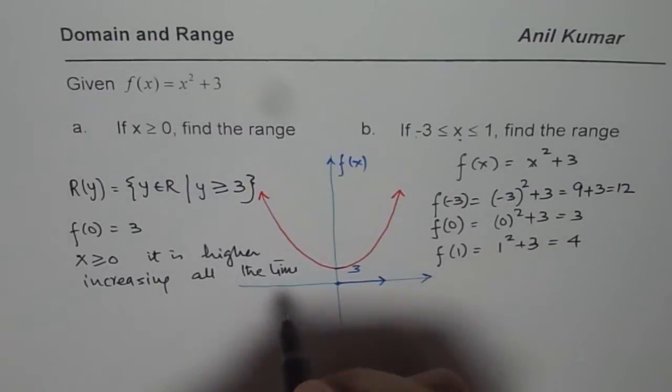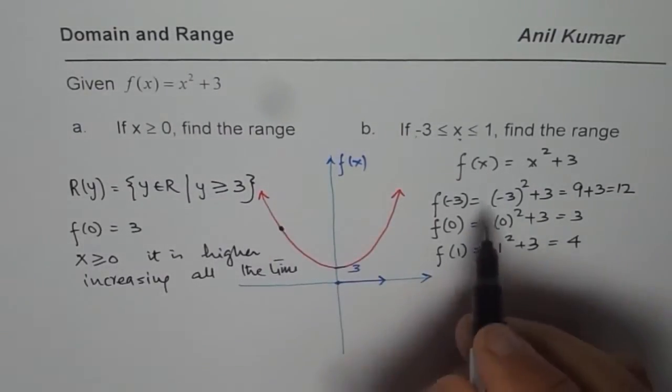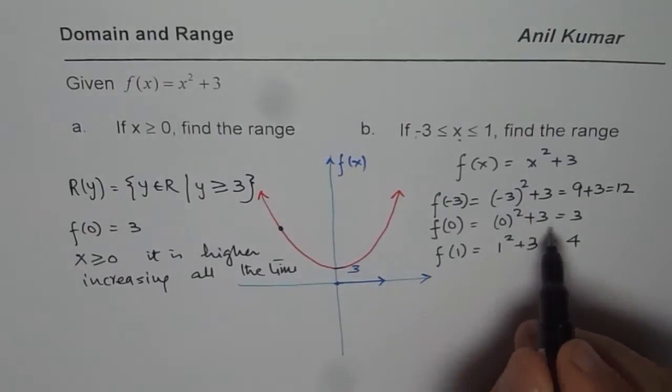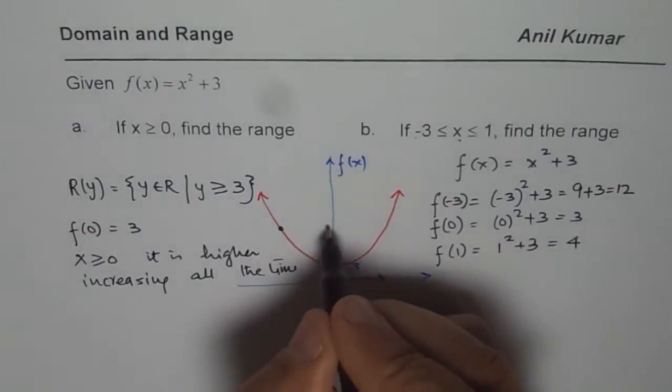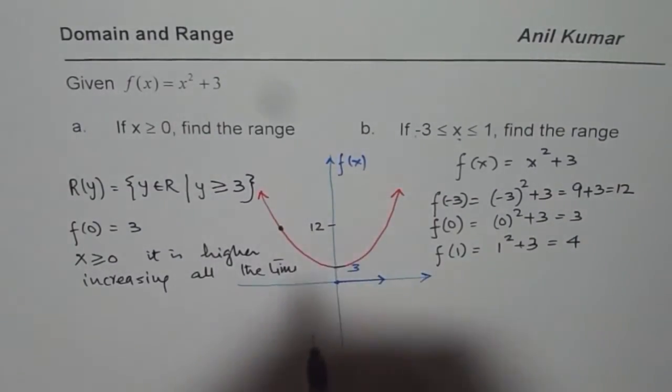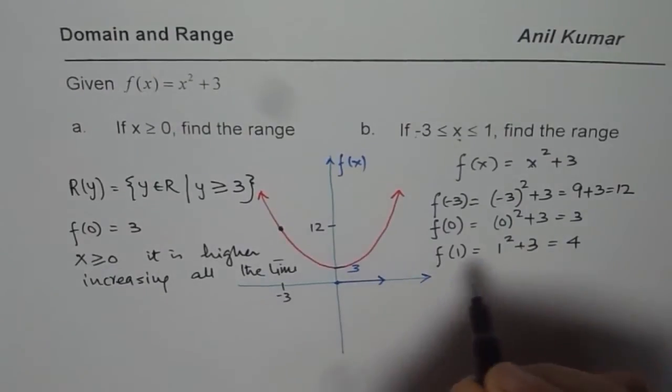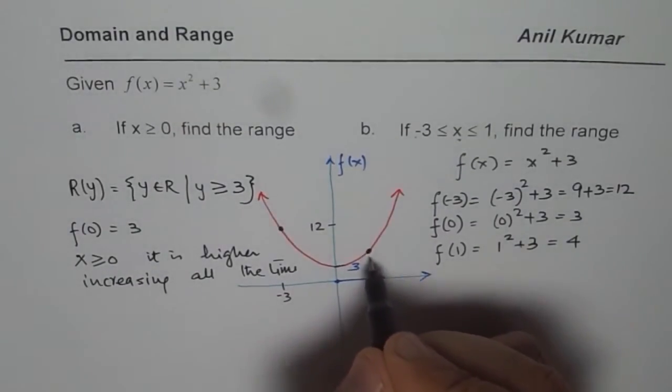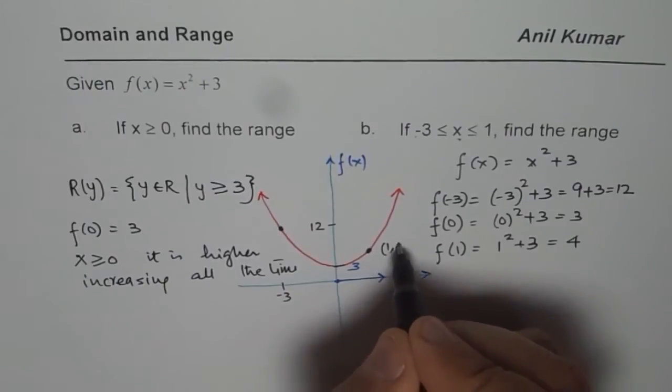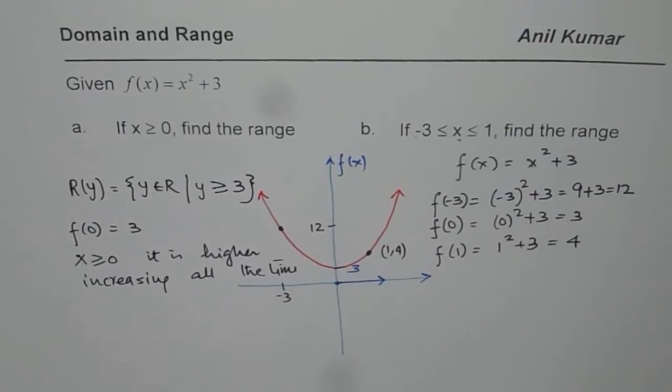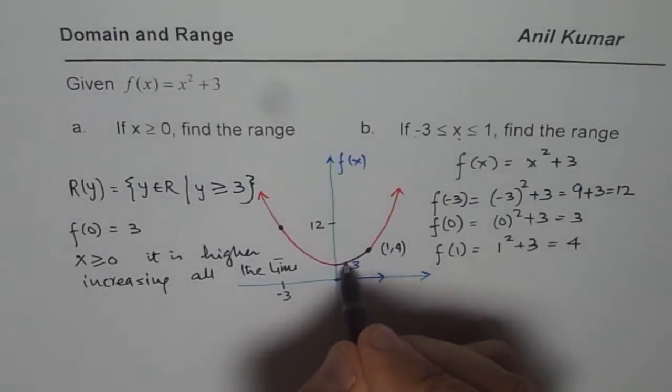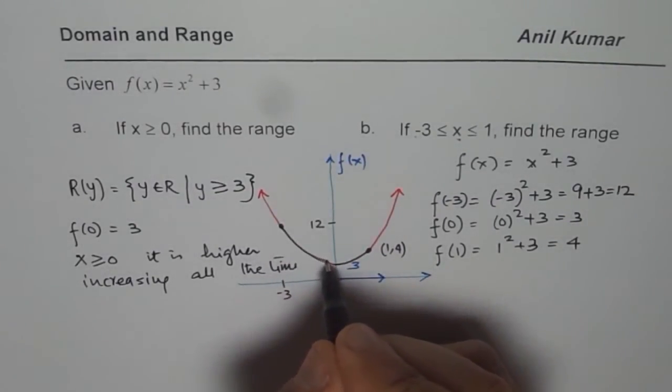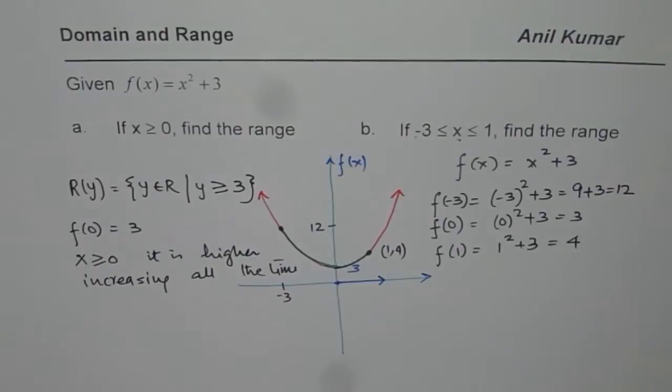So we get a point, let us say this is the point which represents minus 3 and 12. So this point is 12 for us at minus 3. At 1, we have a point, let us say this is point 1 and 4. Now clearly, we are looking into the part of parabola which is from here to there. So these are the two points, including the values.